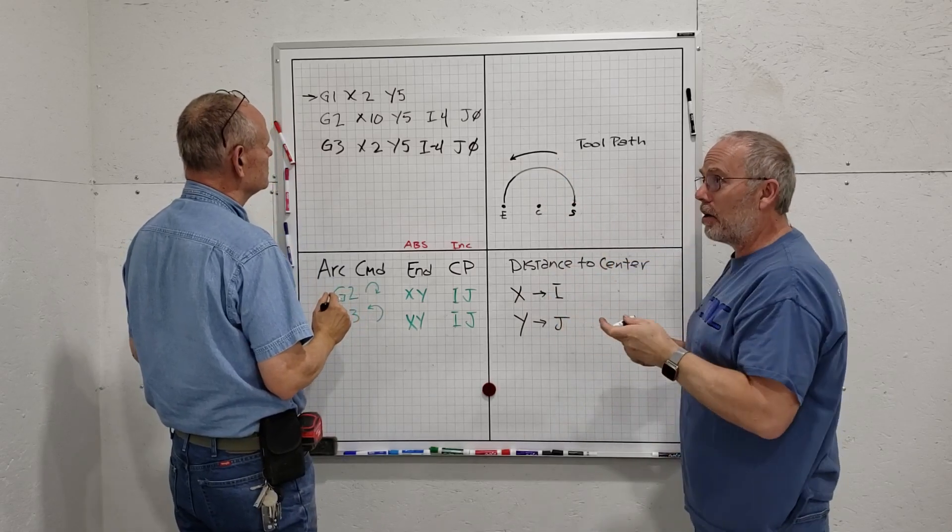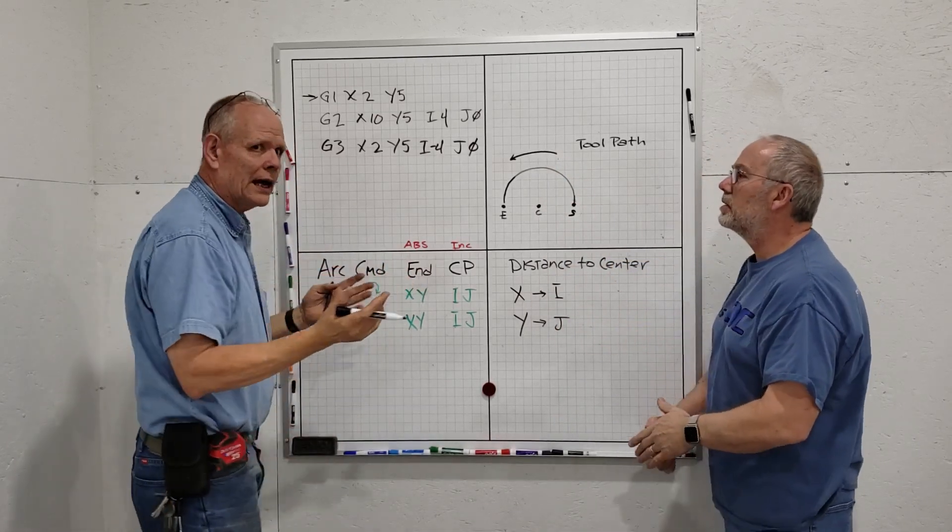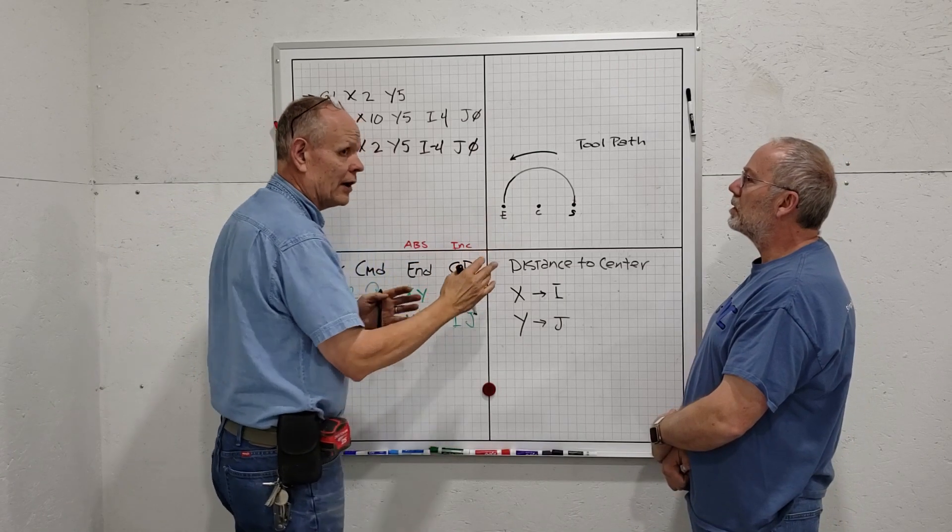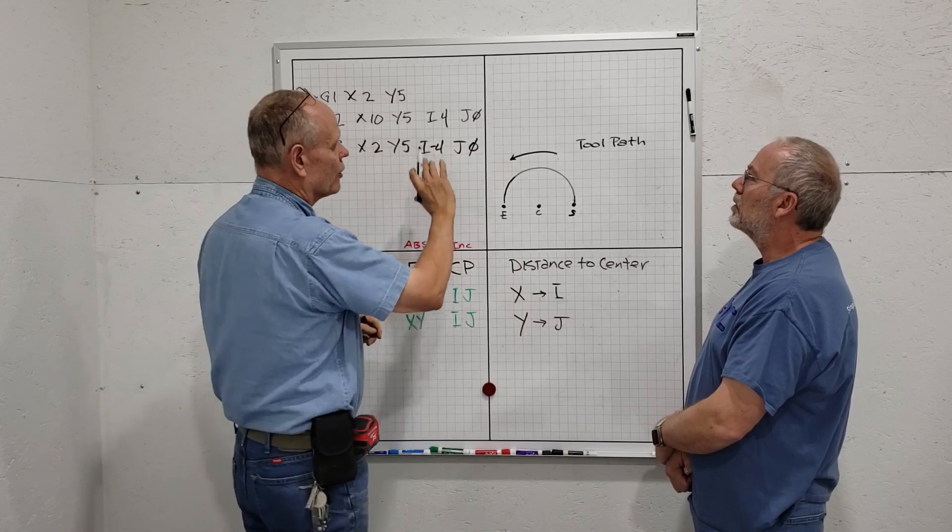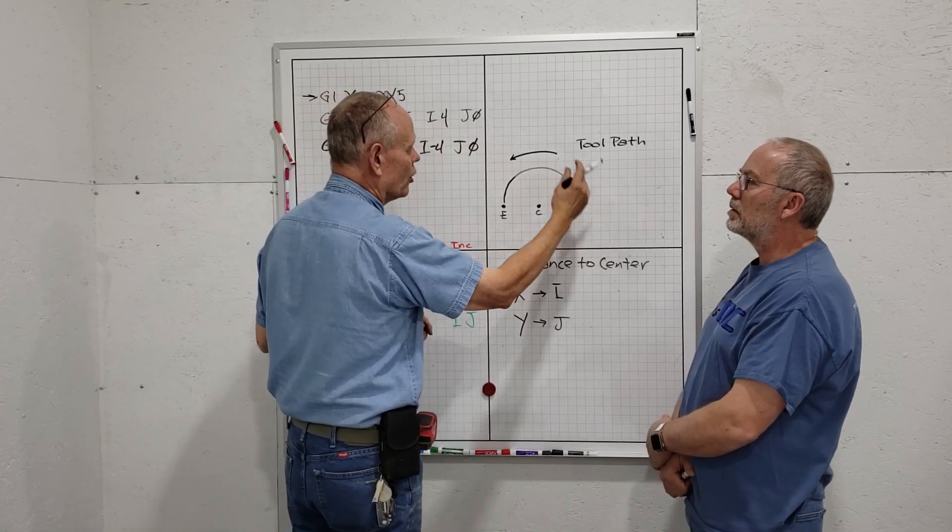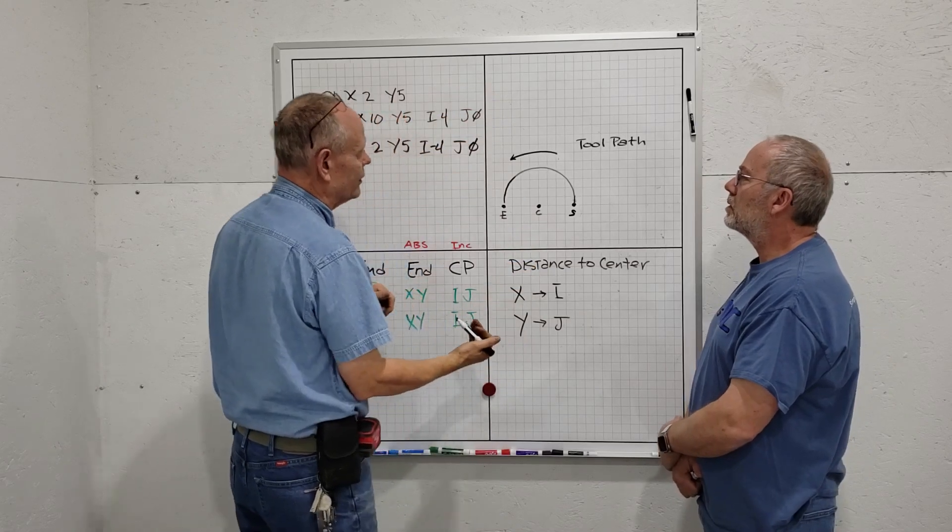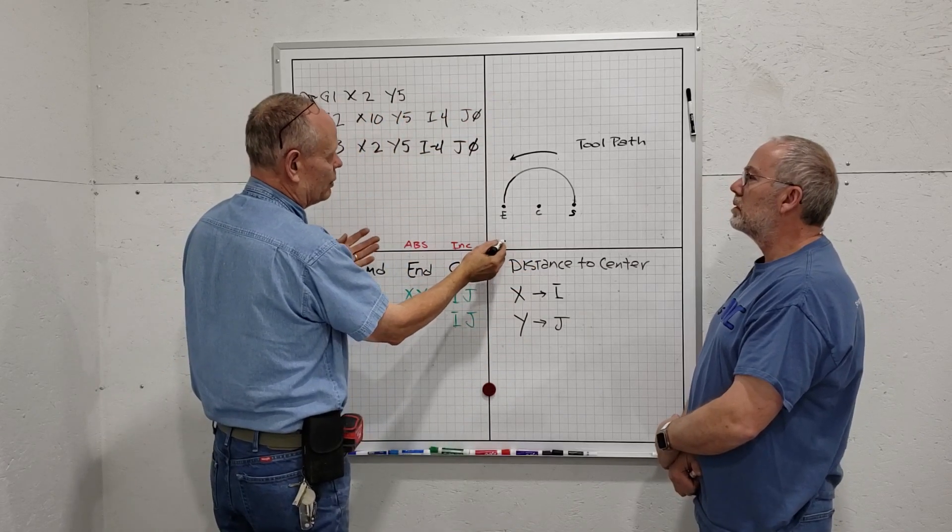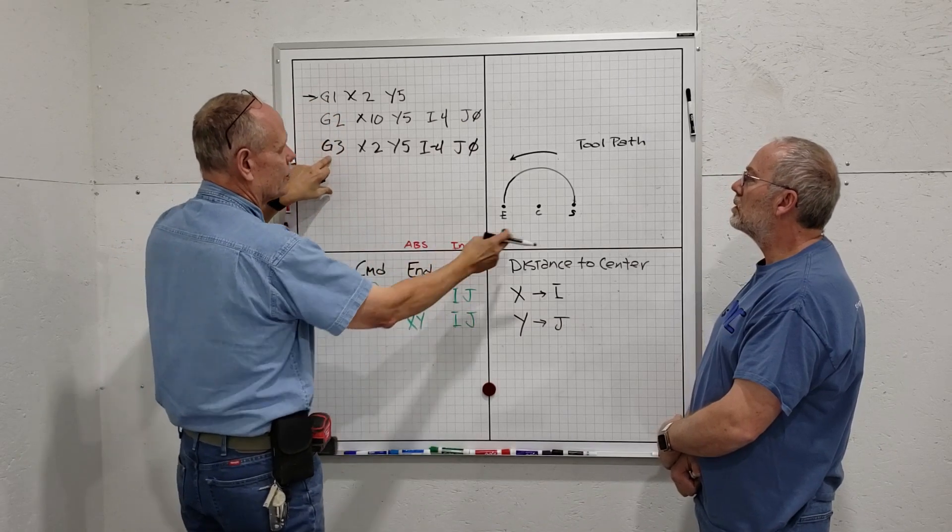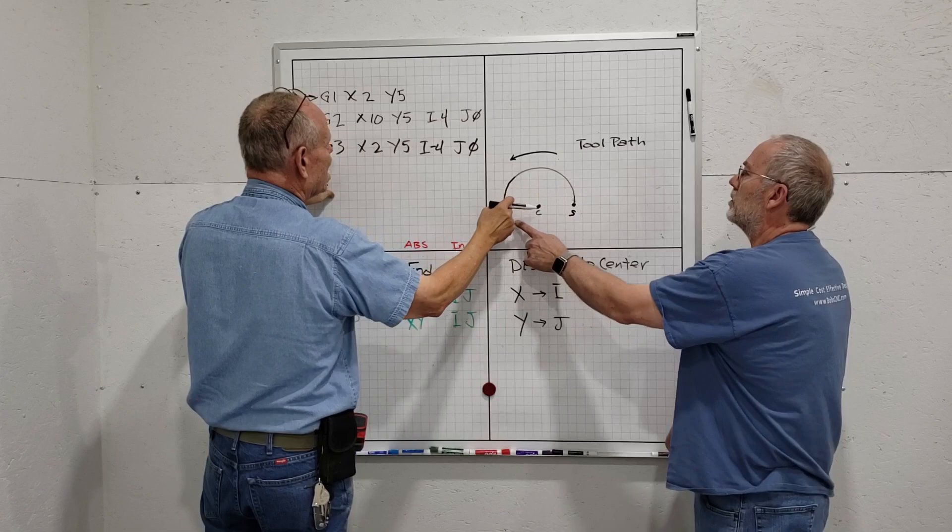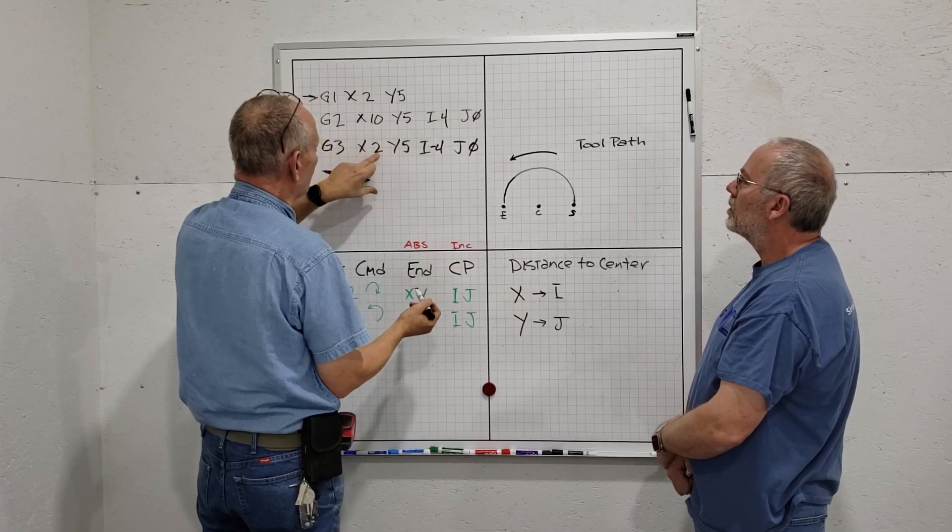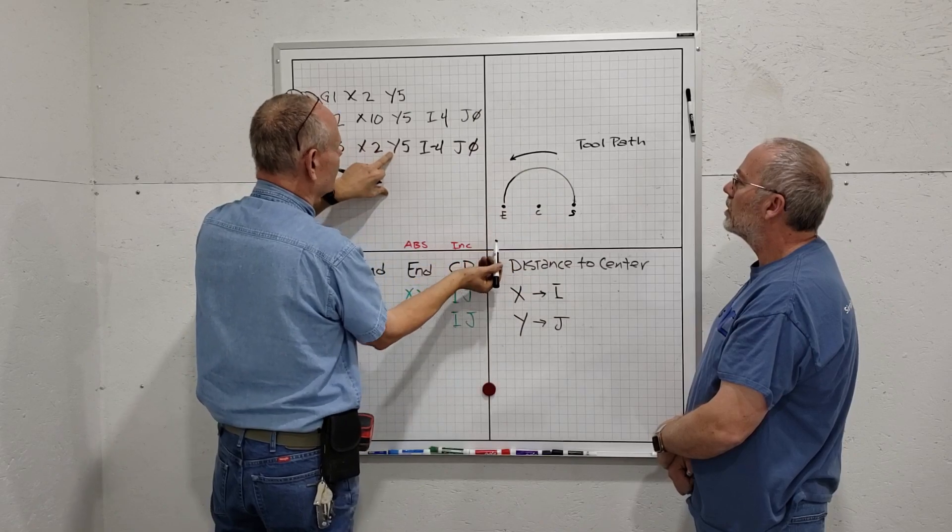Once again, all we're doing is counting little blocks on the grid system. If you're going to write G-code, you want to draw out your workpiece and put it on a grid system. In this case, we're representing inches. With G3, my endpoint is on the X-axis two over, and on the Y-axis I'm five up.